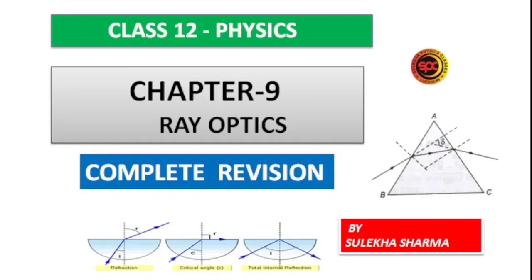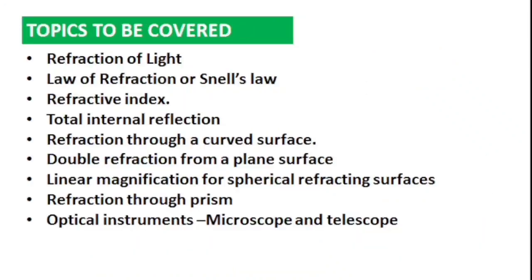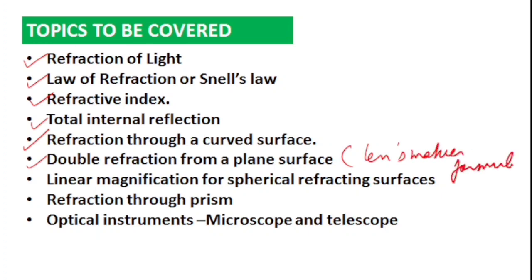Hello, dear students, welcome back to your channel. From today I am going to start Term 2 of Class 12 Physics. In this video I will cover all important points and formulas of all chapters of Term 2 physics. Let us start first with Chapter 9 — Ray Optics. The topics covered are refraction of light, laws of refraction, refractive index, total internal reflection, refraction through a curved surface, lens maker formula, linear magnification, refraction through a prism, and optical instruments including microscope and telescope.